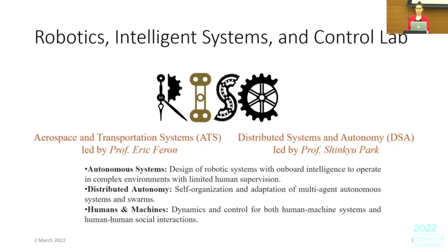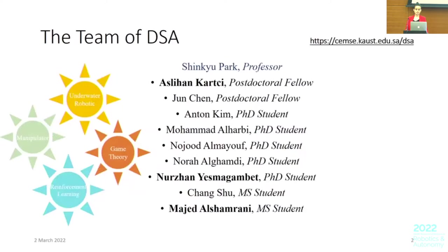Previous speakers have shared their backgrounds, so I will do the same and give a brief introduction about our lab and the Red Sea location near the coast. This is the Robotics Intelligence Systems and Control lab, and we emphasize three topic directions. Our related projects are led by Professor Ferron and Park. Our group, the Distributed Systems and Autonomy group, is relatively new and still receiving new members.